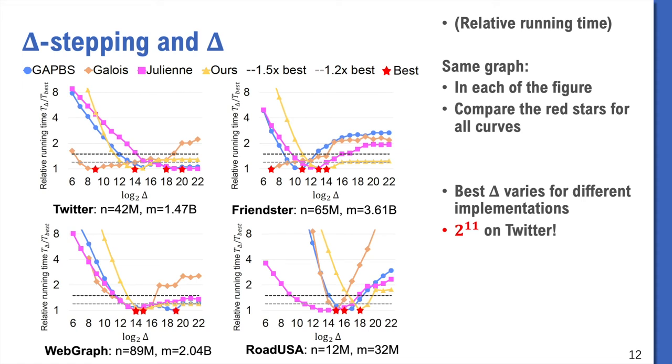In fact, we tested four delta-stepping algorithms, three state-of-the-art and ours. We run delta-stepping using different values of delta on four graphs. Here each figure is a graph, each curve is a graph implementation combination. We normalize them to the fastest running time of all delta. So the smallest value of each curve is always 1, marked with the red stars.